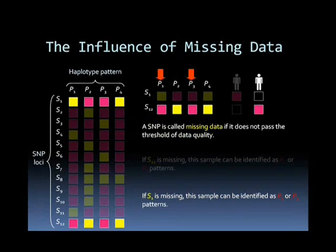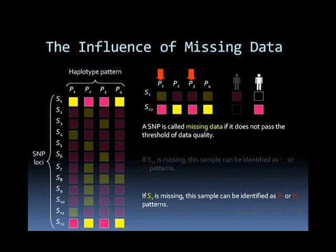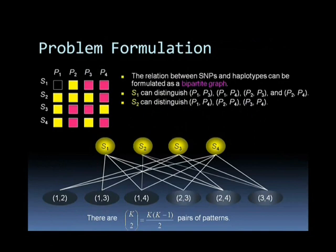A SNP is called missing data if it does not pass the threshold of data quality. For example, if S12 is missing, the sample can be identified as a P2 or P3 pattern. The relation between SNPs and haplotypes can be formulated as a bipartite graph. S1 can distinguish pairs P1/P3, P1/P4, P2/P3, and P2/P4.